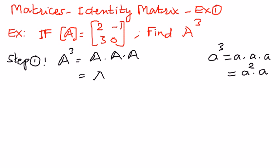We can write A to the power of 3 as A to the power of 2 times A. This property is very similar to the property of exponents, but the only difference here is we have elements within these matrices. So let us see how we can do A to the power of 2 first, and then multiply it to the matrix A again to find the product.